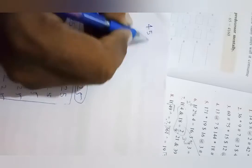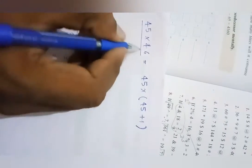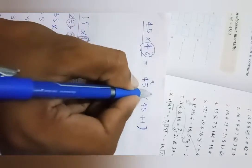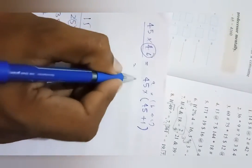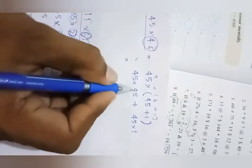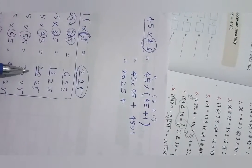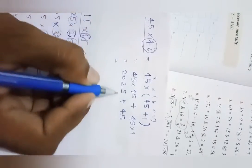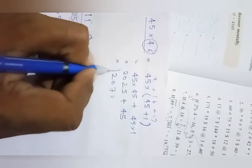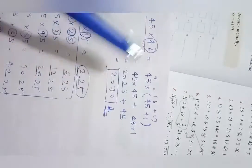In the exercise, questions are like 45 into 46. You break the question: write 46 as 45 plus 1. This is of the form A into (B plus C), so multiply out to get 45 into 45 plus 45 into 1. We know 45 into 45 is 2025, plus 45 gives 2070. That is the answer. Complete questions 1 to 6 using this addition-breaking method.